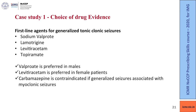The first line agents for generalized tonic-clonic seizures are sodium valproate, lamotrigine, levetiracetam and topiramate. Valproate is preferred for males; levetiracetam is preferred for female patients. Remember, carbamazepine is contraindicated if generalized seizures are associated with myoclonic seizures.